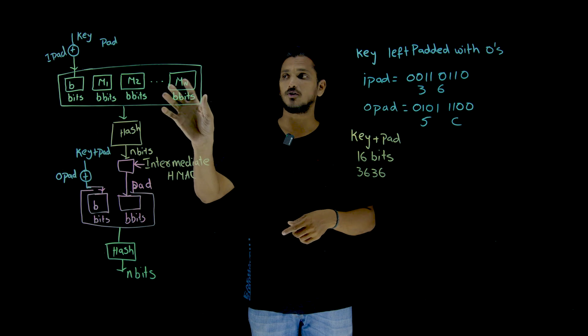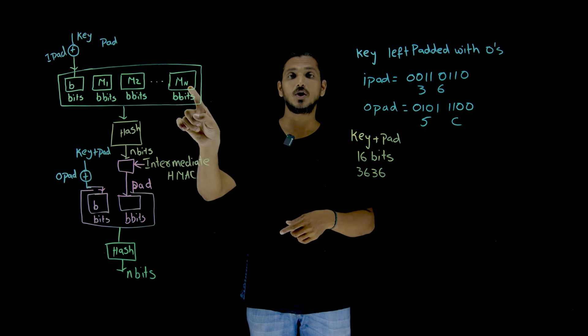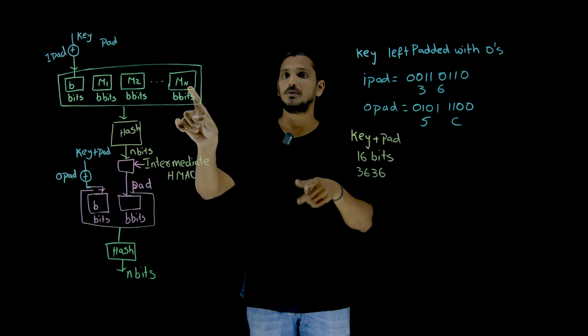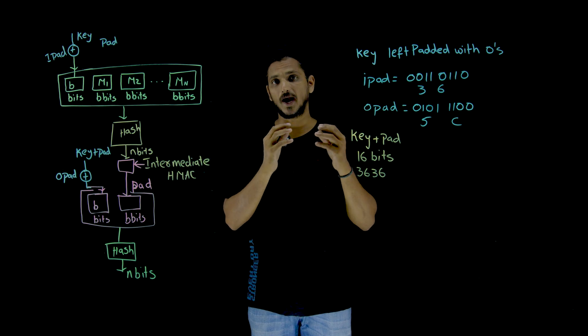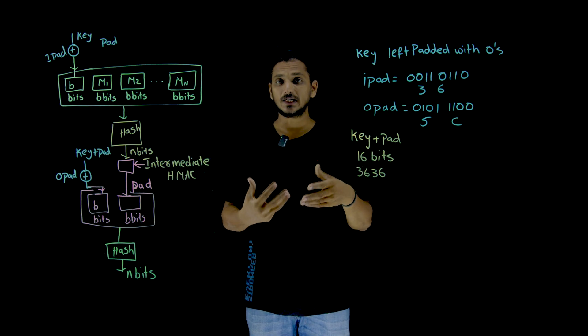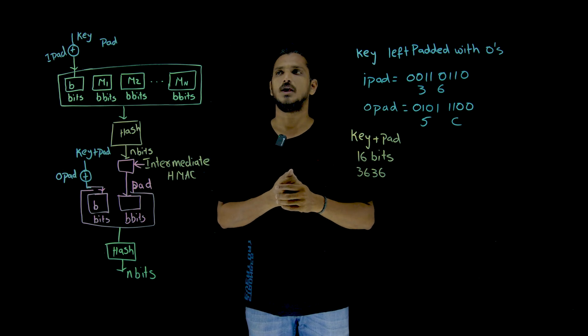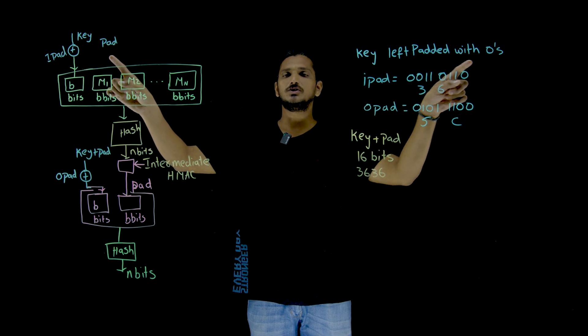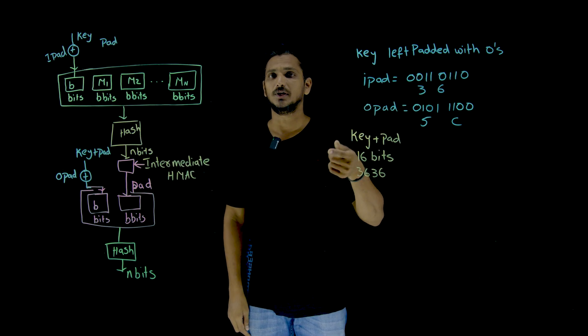Suppose in our message, if the last block does not contain b bits, then we have to do padding and add the bits and make it as b bits. Key is also added with left padded with zeros and make it as b bits.